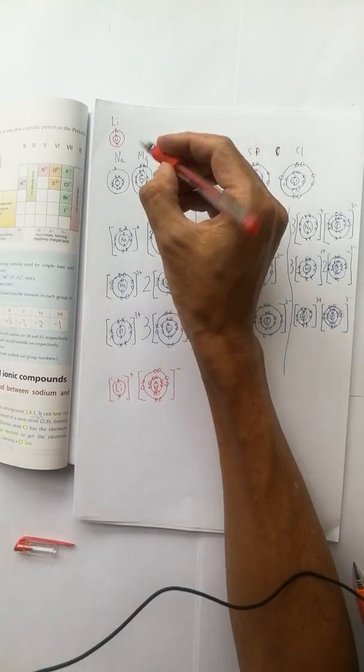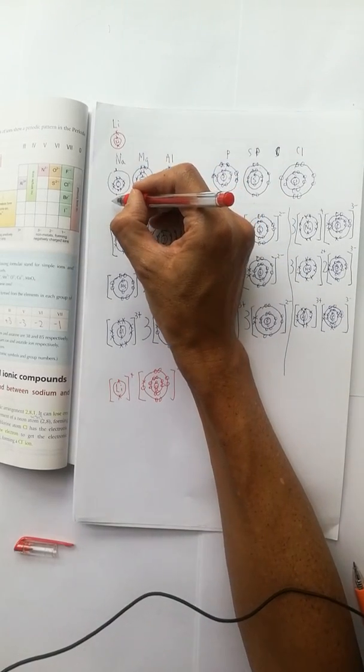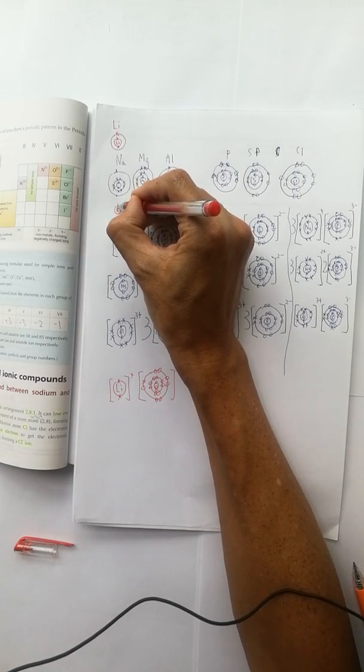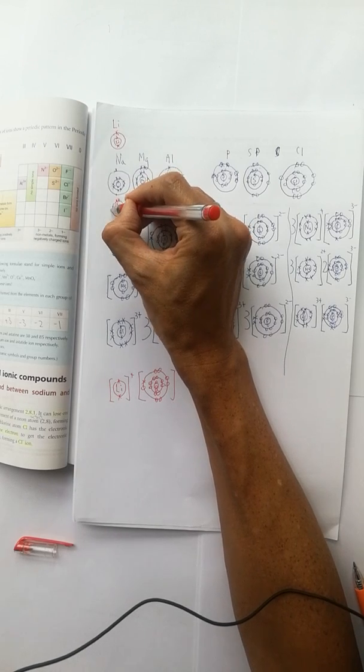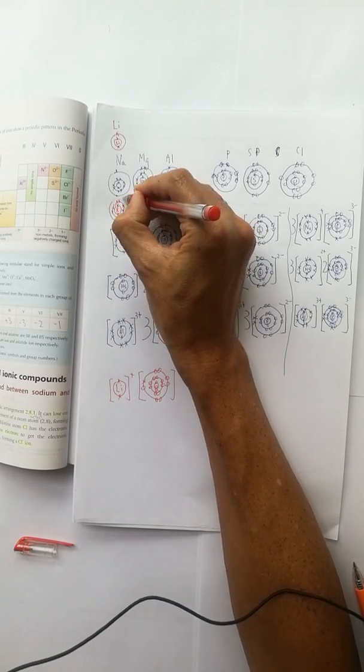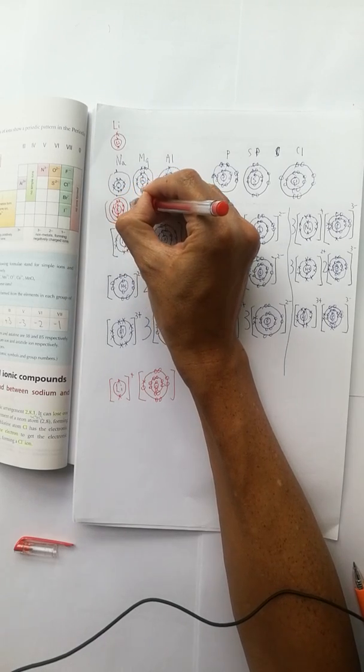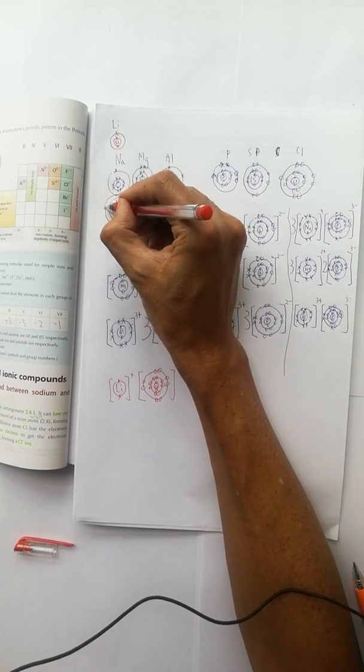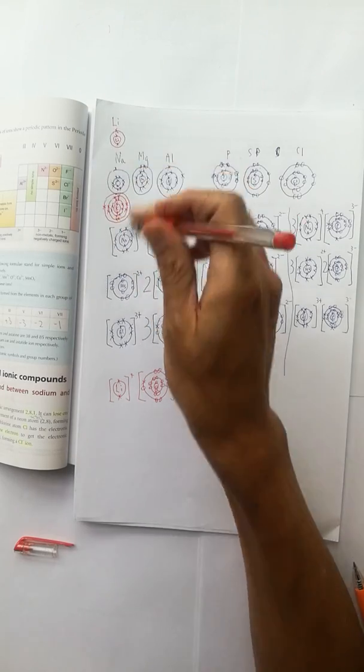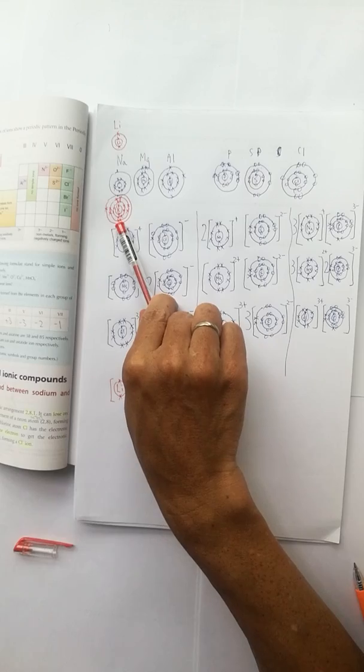And do you know how about moving downward? It is the potassium. The potassium is 2881. So, do you know how to draw potassium and sulfur?